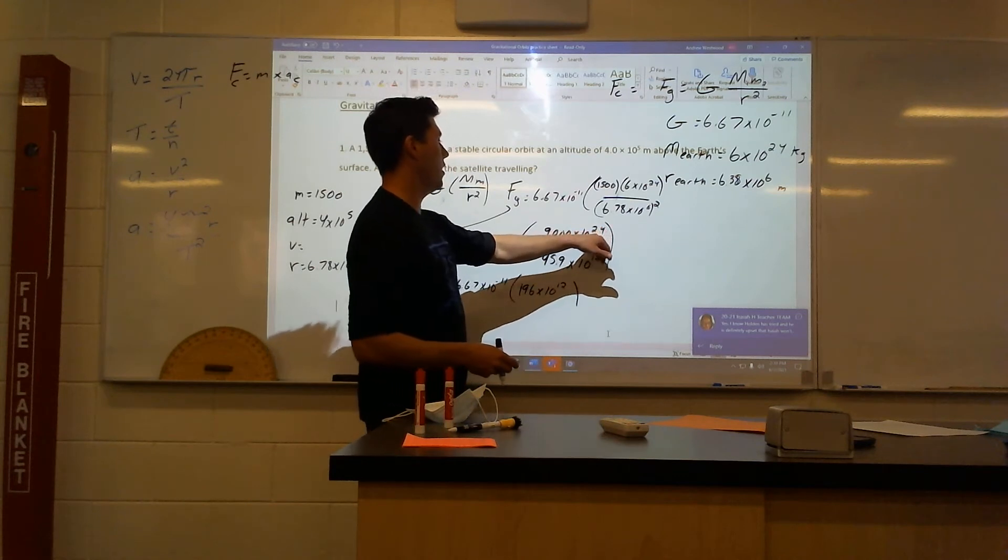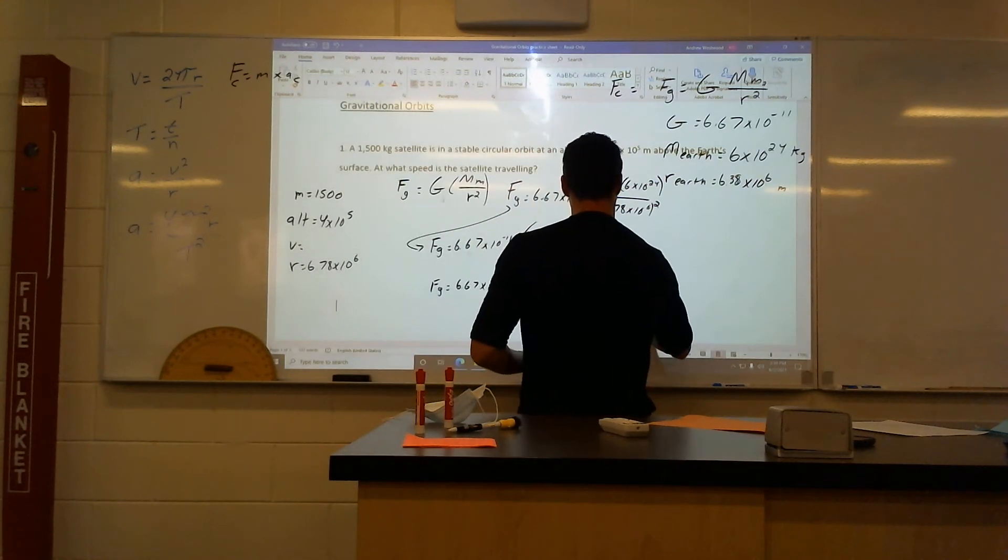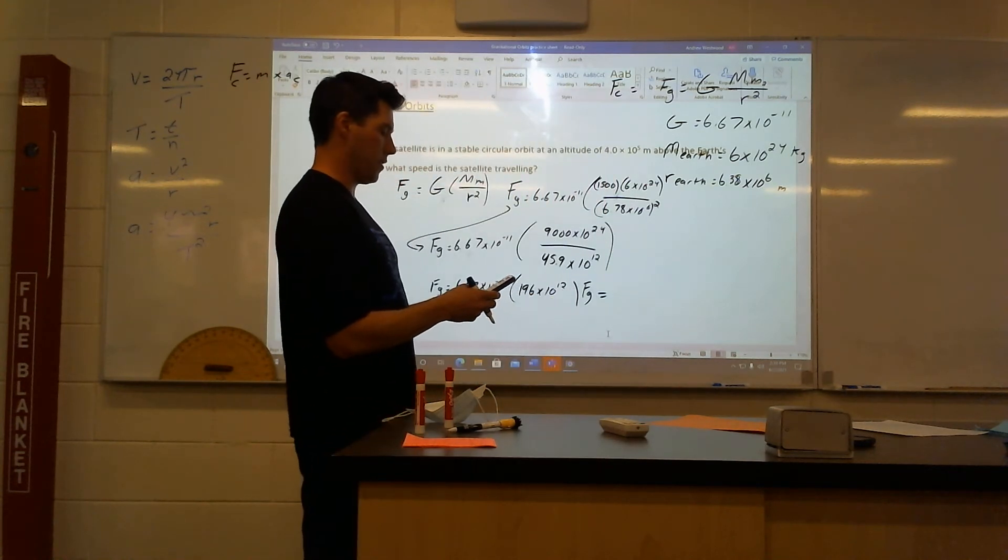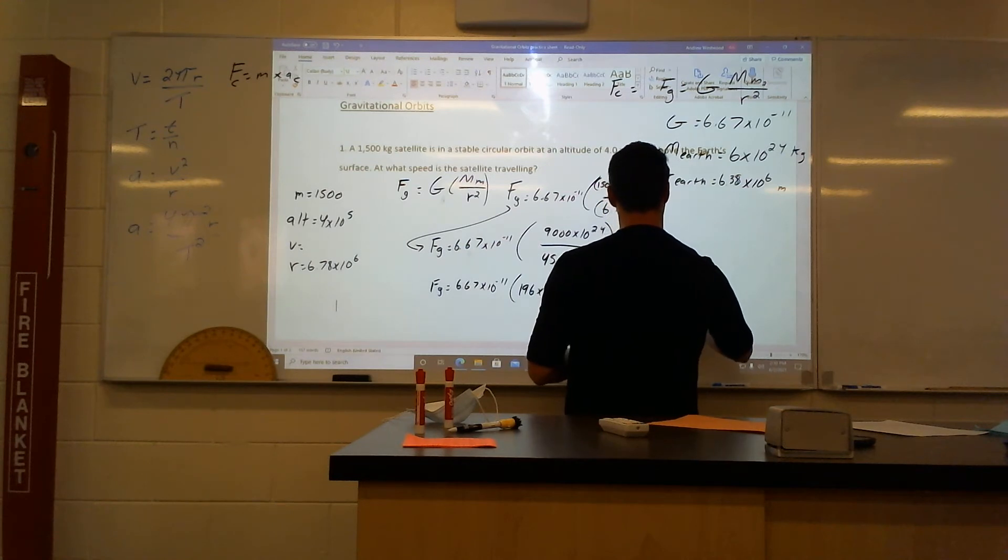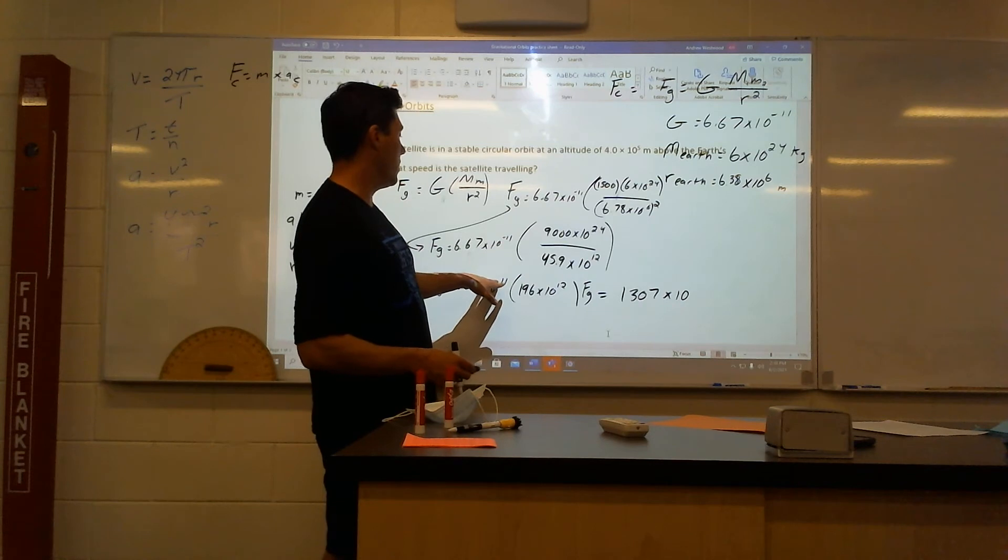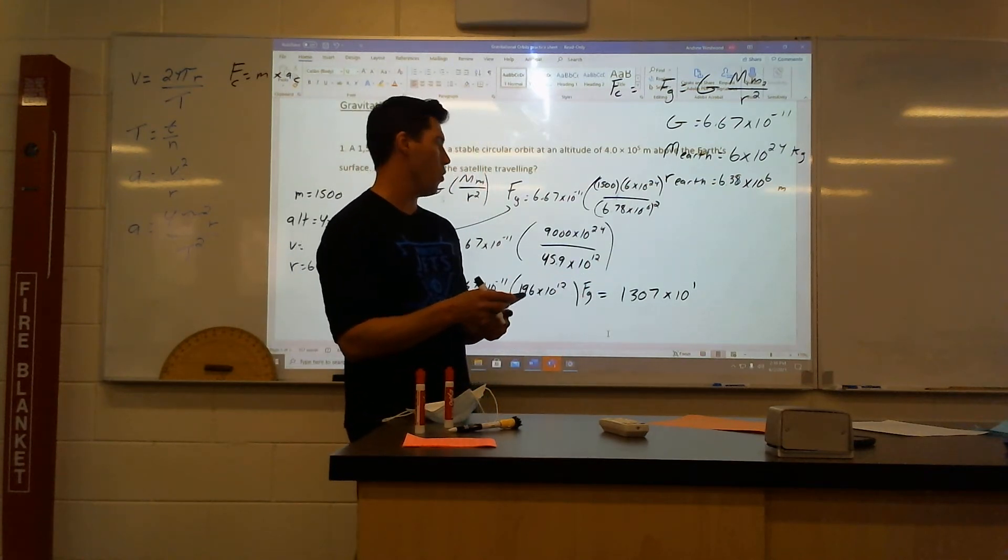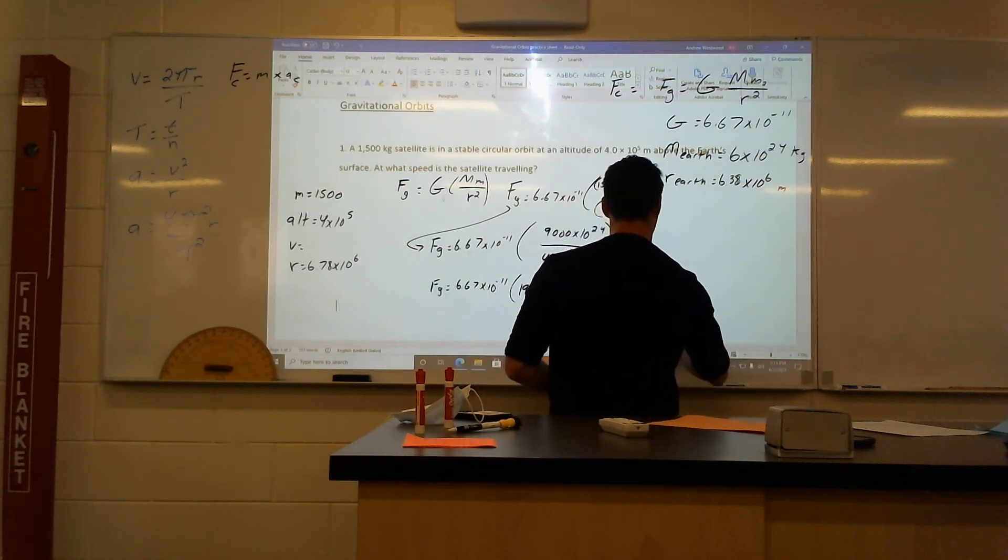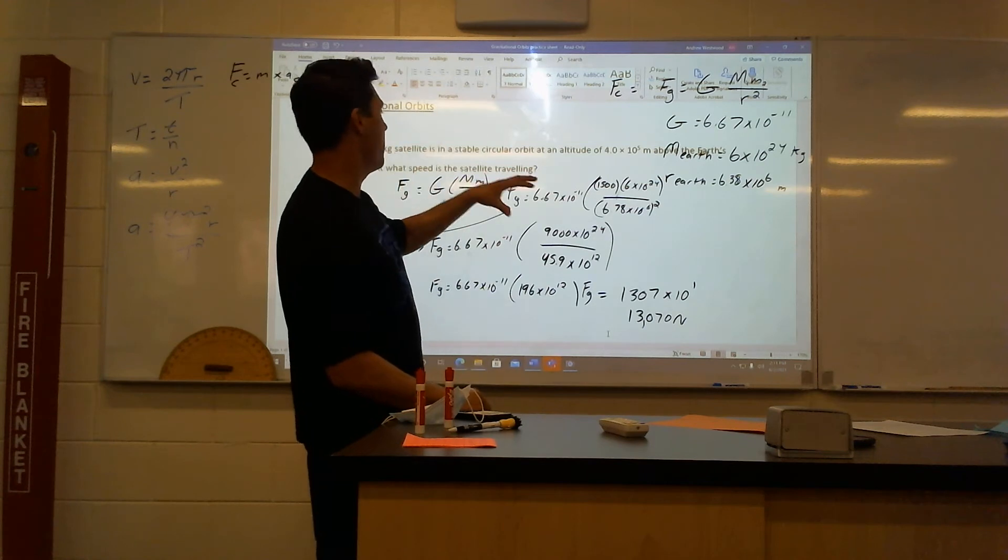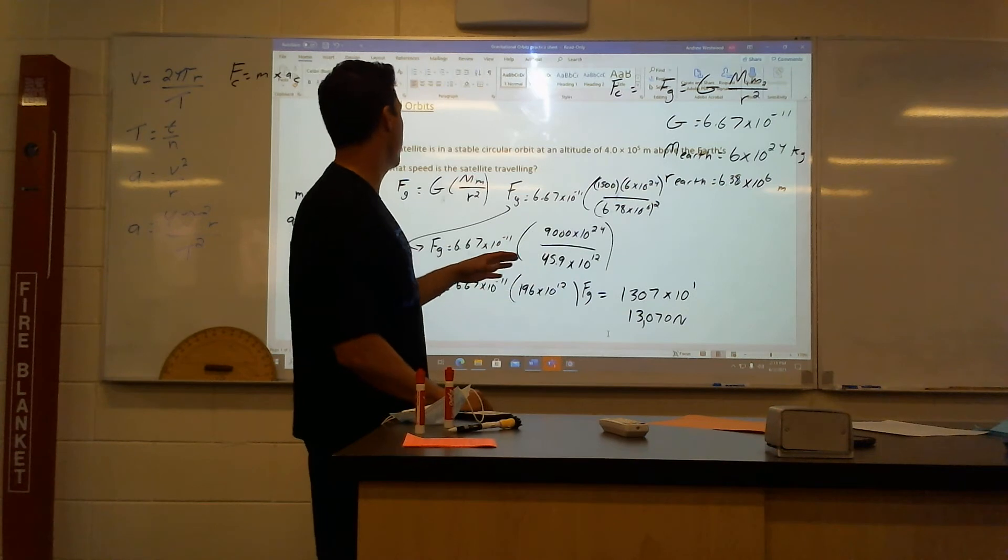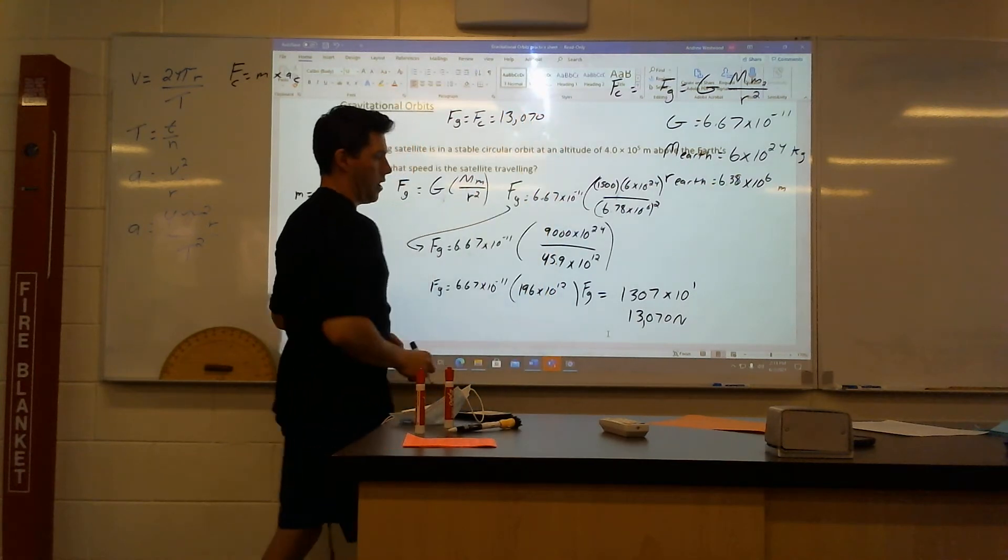Now let's do this part. So force gravity, 6.67 times 10 to the negative 11. Let's figure this out now. So what is 9,000 divided by 45.9? I get 196 times 10 to the power of 12. And the reason is because 24 minus 12 is 12. So there you go. 196 times 10 to the power of 12. Let's actually now finish this. Last step. What is force of gravity? Let's go 196 times 6.67. I get 1,307 times 10 to the power of just 1. And negative 11 plus 12 is just to the power of 1. Which means I can turn this to 1.307 to the power of 4. Or honestly, I'm just going to add a 0.